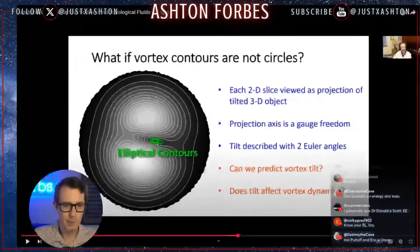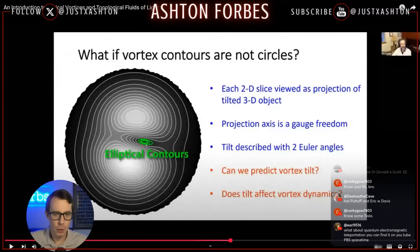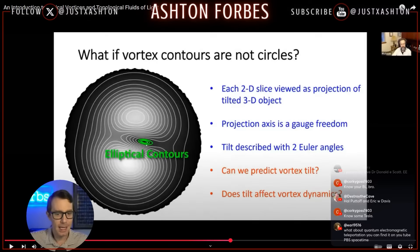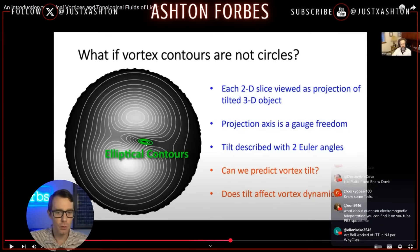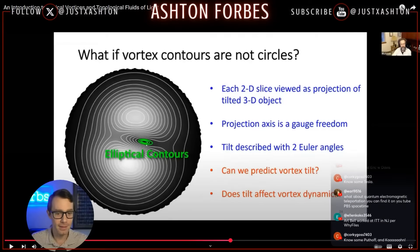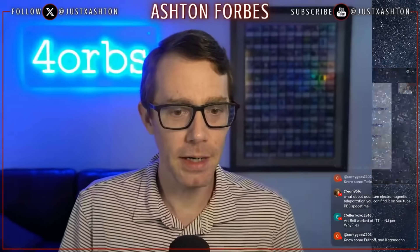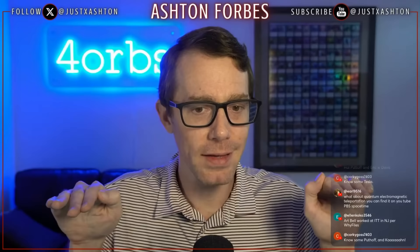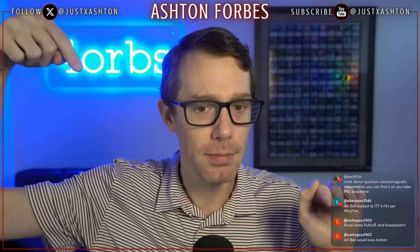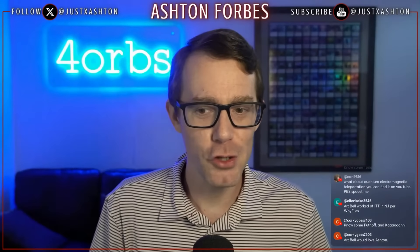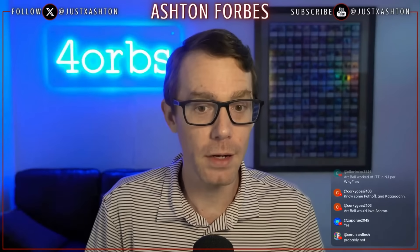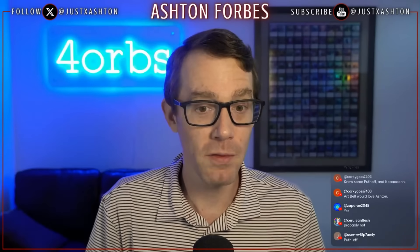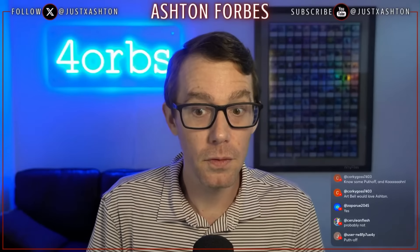Look at what he's saying right here. It says each 2D slice can be viewed as a projection of a tilted 3D object. Projection axis is a gauge freedom. Tilt described with two Euler angles. Can we predict the vortex tilt? Does the tilt affect the vortex dynamics? What he's saying is that we can look at a two-dimensional slice of a vortex and reverse engineer its shape in the ether. All we have to do is figure out the right equations, model it, and plug in the numbers.